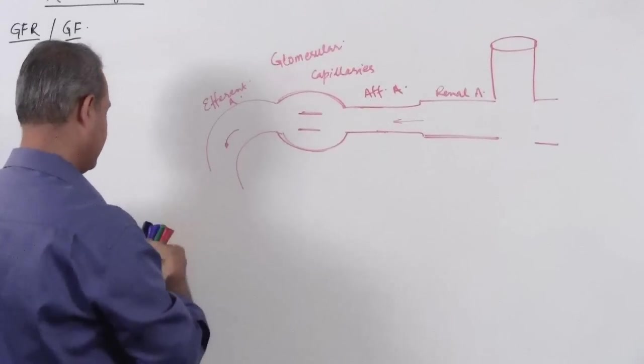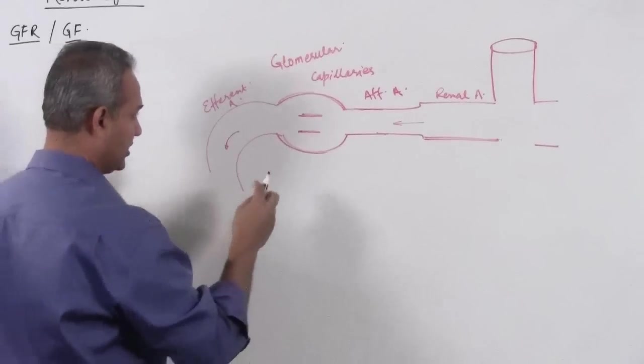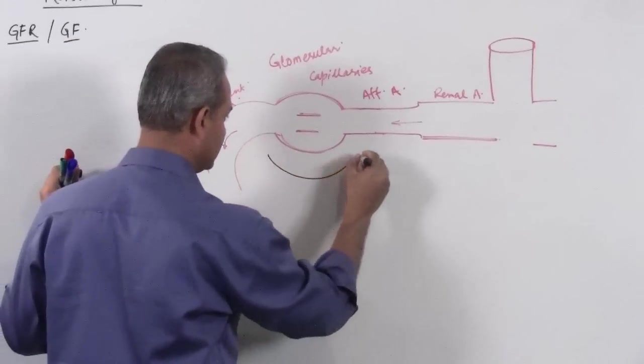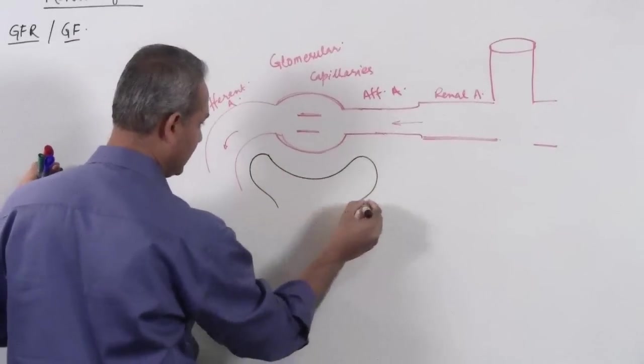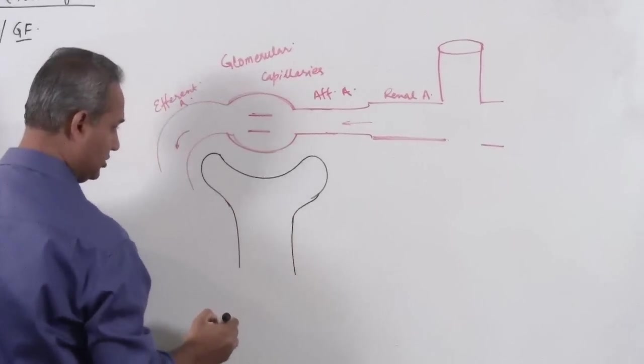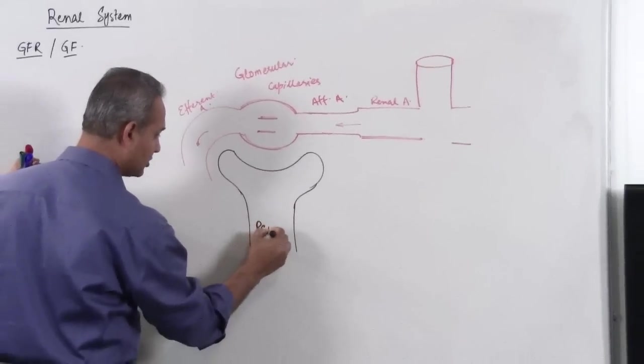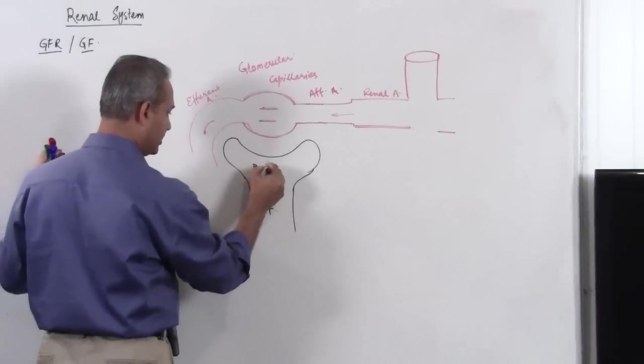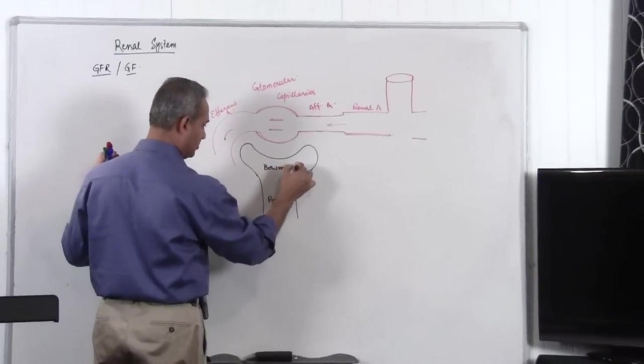But before I make the peritubular capillaries, I want to make the nephron. So here is the Bowman's space, Bowman's capsule, proximal convoluted tubule, Bowman's capsule.